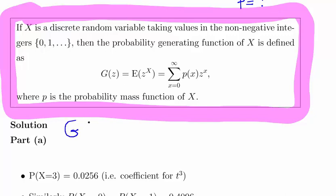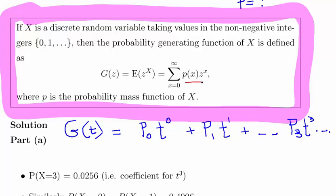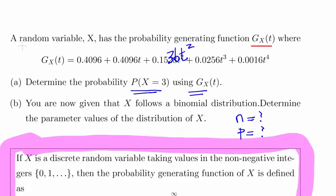So essentially what this is, g of t is the summation of probability of X equal to 0 by t to the power of 0 plus the probability of X equal to 1 times t to the power of 1 plus the probability of X equal to 3 by t to the power of 1, and so on. That's essentially just adjusting z to t. And it actually fits the form that we are given here.